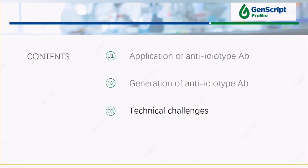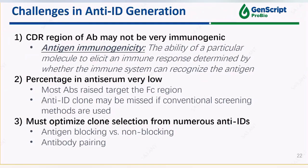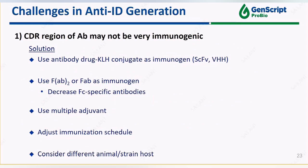We will discuss some of the technical challenges during generation of anti-idiotype antibody. First of all, the variable region may not be immunogenic, and the constant region takes a large part of the drug. As a result, only a small portion of antibodies are actually anti-idiotype. We may conjugate carrier proteins such as KLH or BSA to enhance the immune response for smaller drugs like single-chain Fv or nanobody. Alternatively, we can use the Fab fragment as the immunogen to reduce Fc-specific antibody. Different adjuvants, animal strains, and immunization schedules can also be included for maximum success rate.